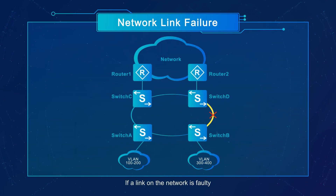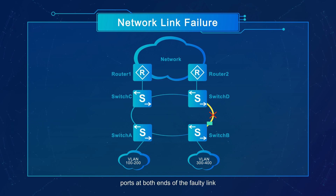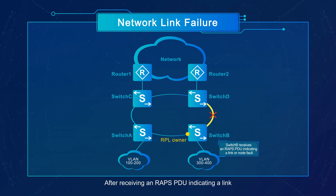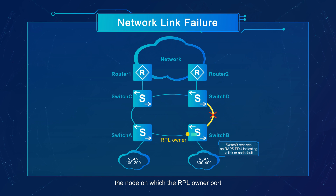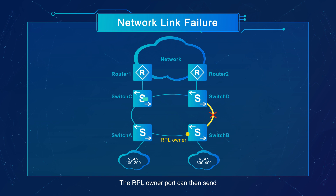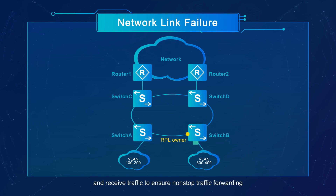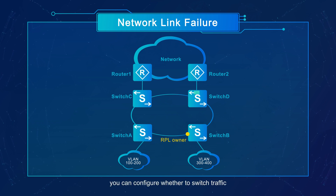If a link on the network is faulty, the ERPS protection switching mechanism blocks the ports at both ends of the faulty link. After receiving an RAPS PDU indicating a link or node fault in an ERPS ring, the node on which the RPL owner port resides unblocks the RPL owner port, allowing it to send and receive traffic to ensure non-stop traffic forwarding. When the fault is rectified, you can configure whether to switch traffic back to the original link as required.